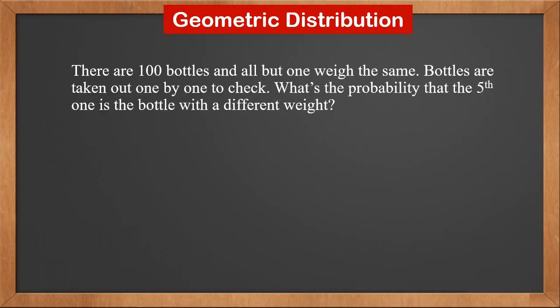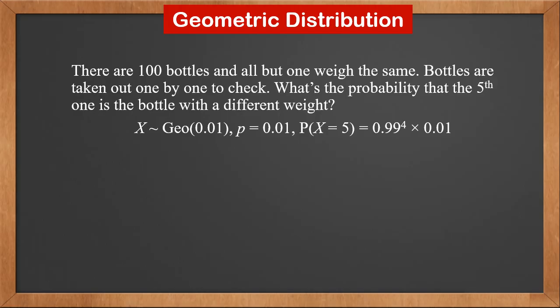Let's take a look at a practical situation and see if we can apply geometric distribution to it. There are 100 bottles, and all but one weigh the same. Bottles are taken out one by one to check. What's the probability that the fifth one is the bottle with a different weight? We might think X ~ Geo(0.01), and p5 is 0.99 to the power 4 times 0.01.